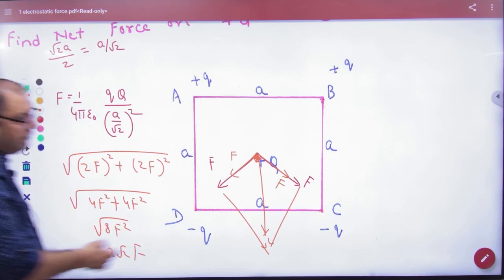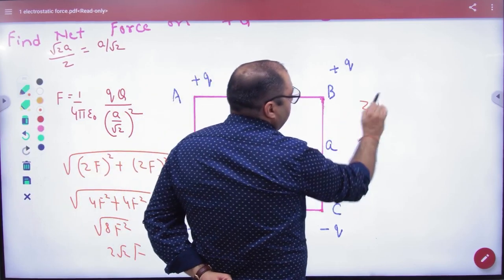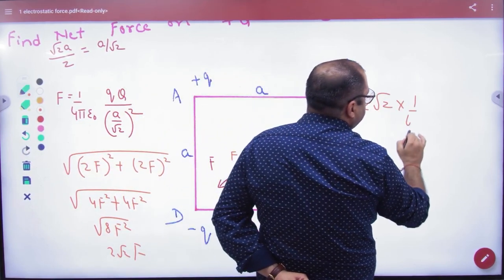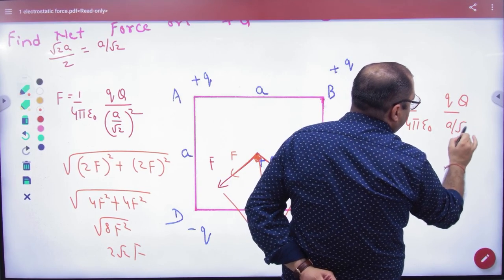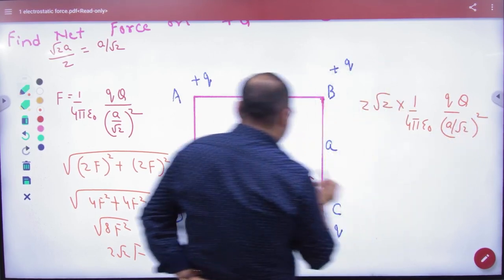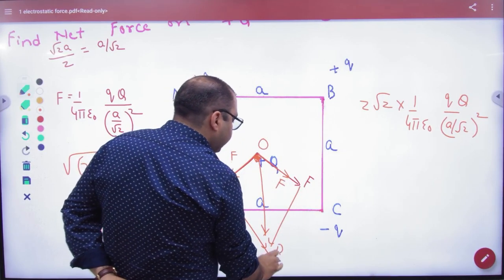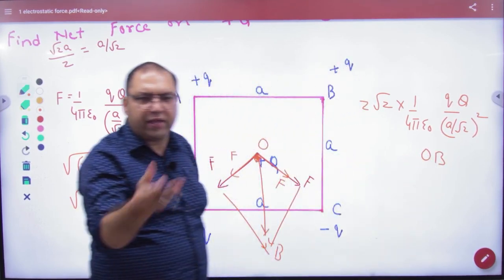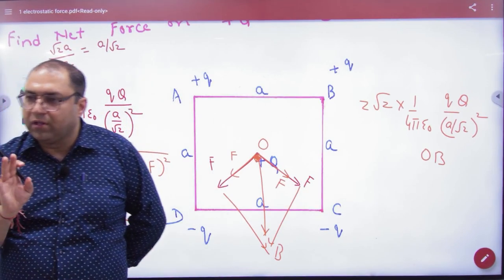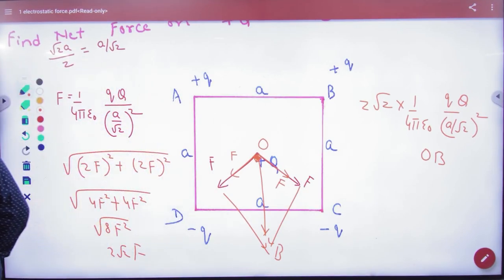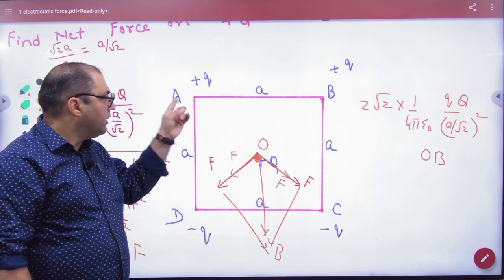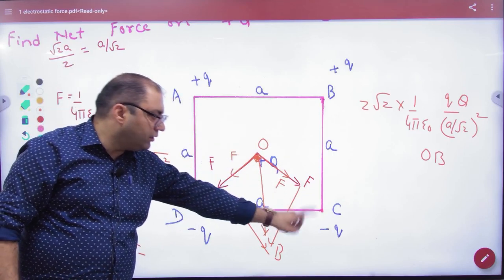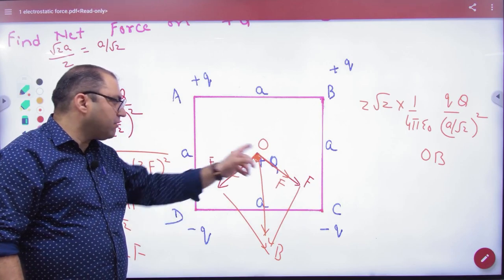This will be the answer. So F ki value put kar do: 2 root 2, 1 by 4 pi epsilon 0, q into Q divided by a by root 2 ka whole square. And for direction you can write along OB or negative y axis, kuch bhi likh sakti hai. But the point is that the magnitude of force due to all 4 charges will be same, just direction differs. This plus plus repels, this plus plus repels, this negative plus attracts, and this negative plus attracts.